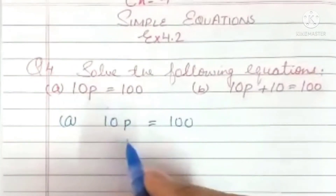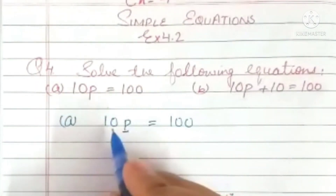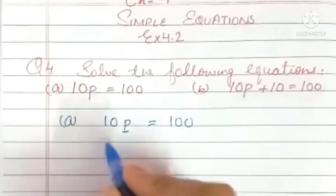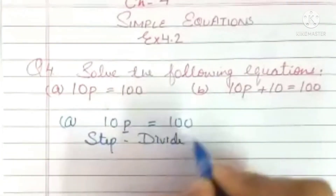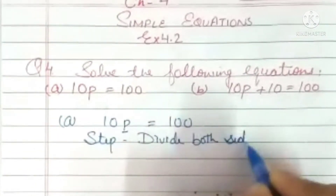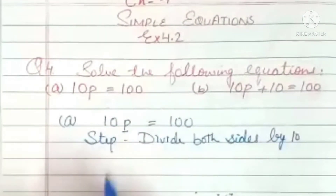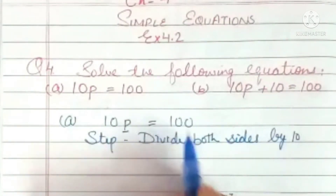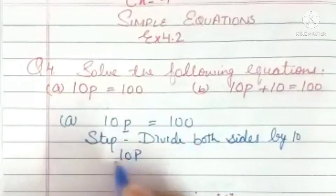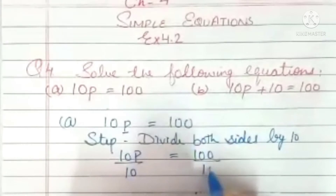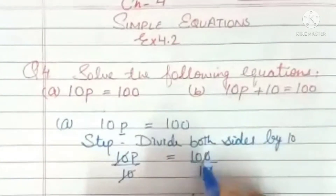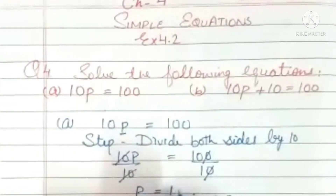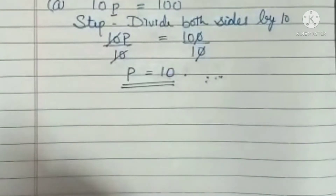Here we need to separate the variable p. 10 is multiplied with p, so we will use the step: divide both sides by 10. We divide LHS and RHS both by 10. Here 10 and 10 are cancelled, and the zeros are cancelled too. So what is left? p is equal to 10. The value of p is 10. This is your first part.